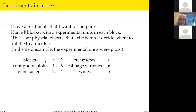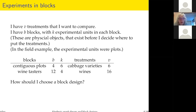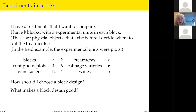In my field example the experimental units were plots, but they might not be more generally. The blocks and experimental units are real things, and then I have to decide where to put the treatments. Imagine a second experiment: we have 16 new wines and 12 professional wine tasters, each tasting and scoring some wines. Giving each taster 16 wines is too many; it would be much more plausible to give each taster only four. Given these numbers B, K, and V, how should I choose a block design?